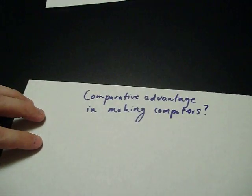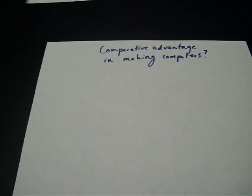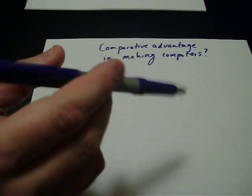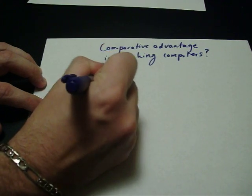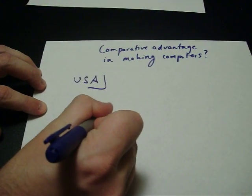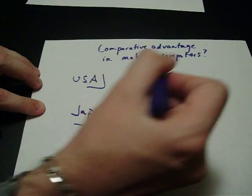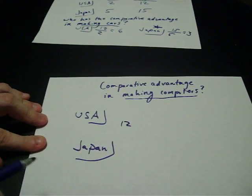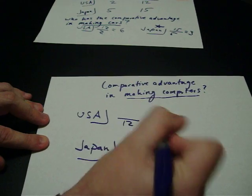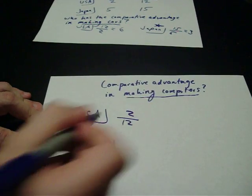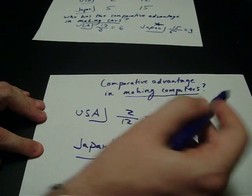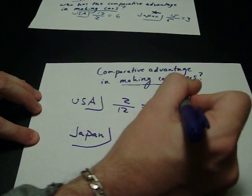Now let's look at who has the comparative advantage in making computers. For the United States, if they make computers, they can produce 12 — that goes to the denominator. The other product they give up producing is cars, which is 2. So 2 over 12 reduces to 1/6, meaning for every computer they produce, they give up the opportunity to produce 1/6th of a car.